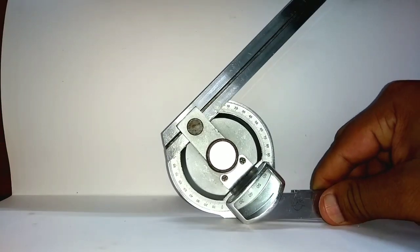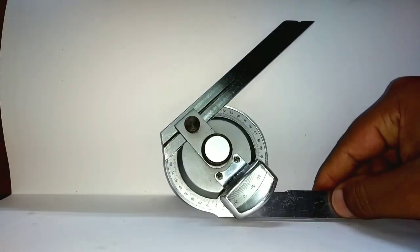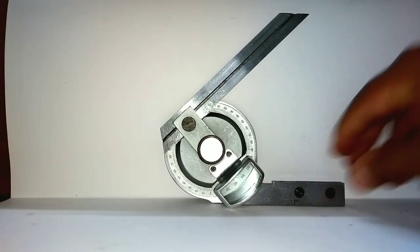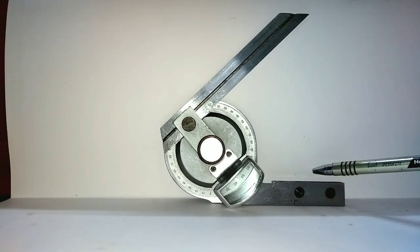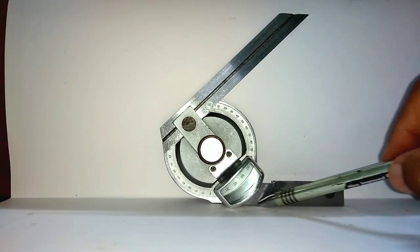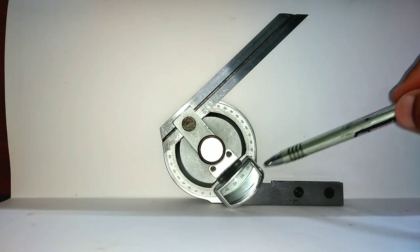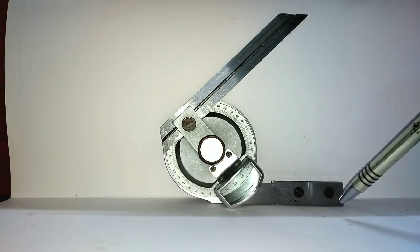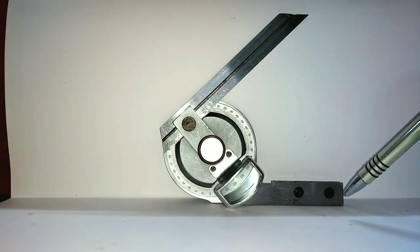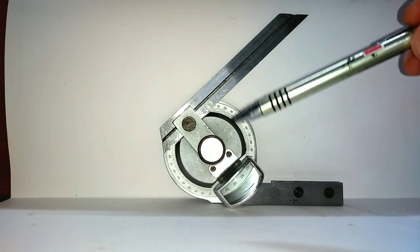The flatness of working edge of the stock and body is tested by checking the squareness surface of the blade with respect to stock when blade is set at 90 degree.